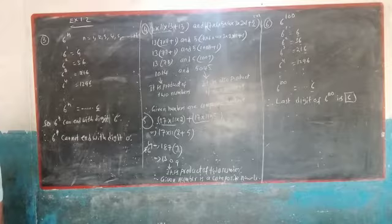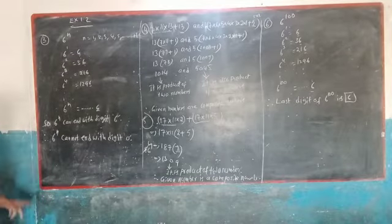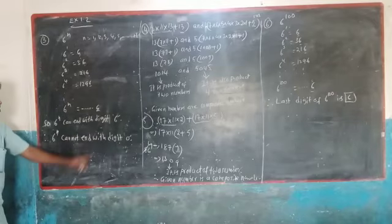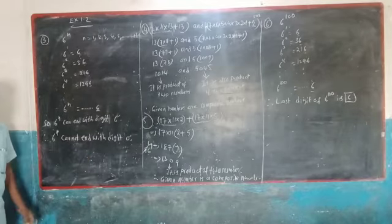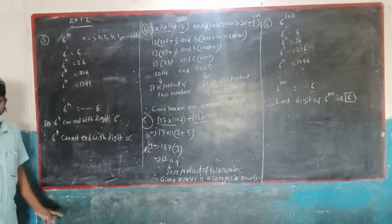But if 6^N can end with the digit 0 — no. Therefore 6^N cannot end with the digit 0.